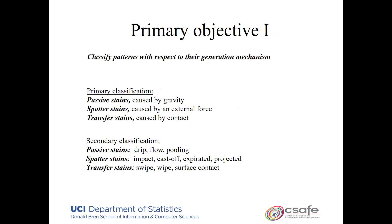What do we mean by the generating mechanism of the bloodstain pattern? There are primary classifications — passives, pattern, transfer — and then secondary classifications. We're largely focusing on the secondary classification question: can we distinguish an impact event, blood that came because someone was struck, from a cast-off, which is when someone carrying a bloody weapon leaves droplets of blood. I should warn there are pictures of bloodstain patterns, so if you're squeamish at the sight of blood, this may not be the talk for you.